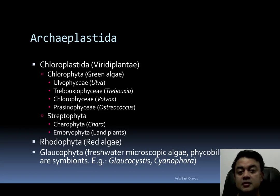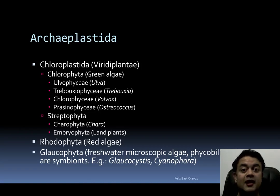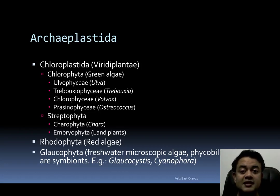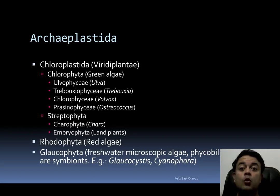Chloroplastida is another synonym for Viridiplantae. It has two main groups: Chlorophyta (green algae) and Streptophyta (Chlorophyta plus embryophytes). Streptophyta is a natural monophyletic group, but Chlorophyta is not. If chlorophyta is defined only as the UTC clade — Ulvophyceae, Trebouxiophyceae, and Chlorophyceae — then yes, it forms a clade, but if Prasinophyceae is included, it is not.